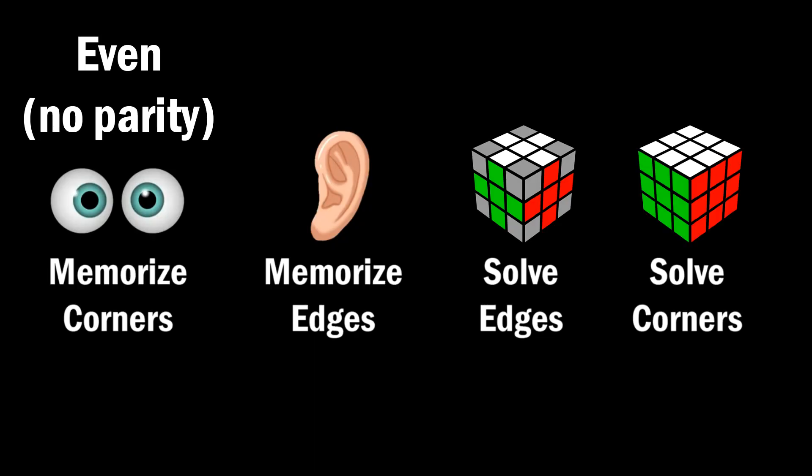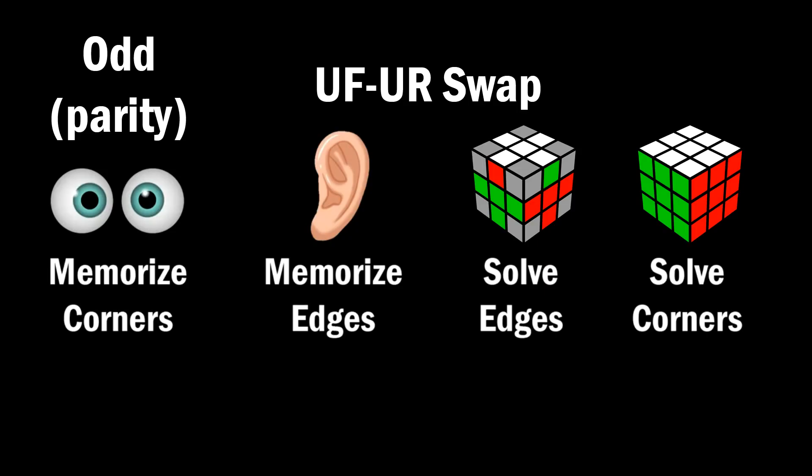If you memorize corners and have an even number of letters, then there's no parity and you can memorize edges as usual. But for an odd number of corners, you have to memorize edges so that UF and UR get swapped.